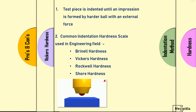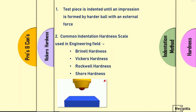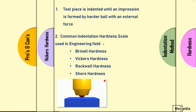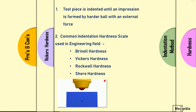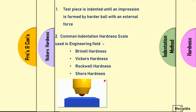The four hardness scales used in the field are: first, Brinell hardness; second, Vickers hardness; third, Rockwell hardness; and fourth, Knoop hardness. In this video we'll focus on Vickers hardness.